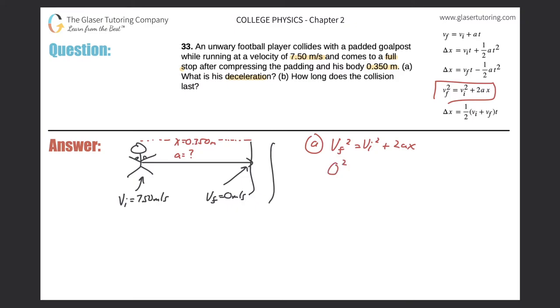So the final velocity is 0. That's easy. Initial velocity is 7.50. That's squared. Two times now my acceleration, which is what I'm trying to find. And my displacement here is going to be 0.350 meters. I have consistency in all the units over here. So I don't need to do any conversions or anything like that. And I know my acceleration units should be then in meters per second squared.